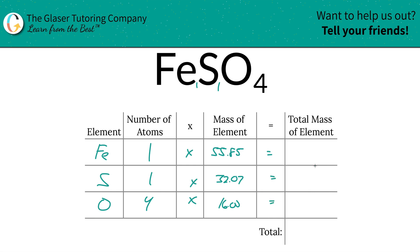All we simply have to do is multiply across each row to find the total mass of each element in the compound. The total mass of iron is 55.85, the total mass of sulfur is 32.07, and the total mass of oxygen is 64.